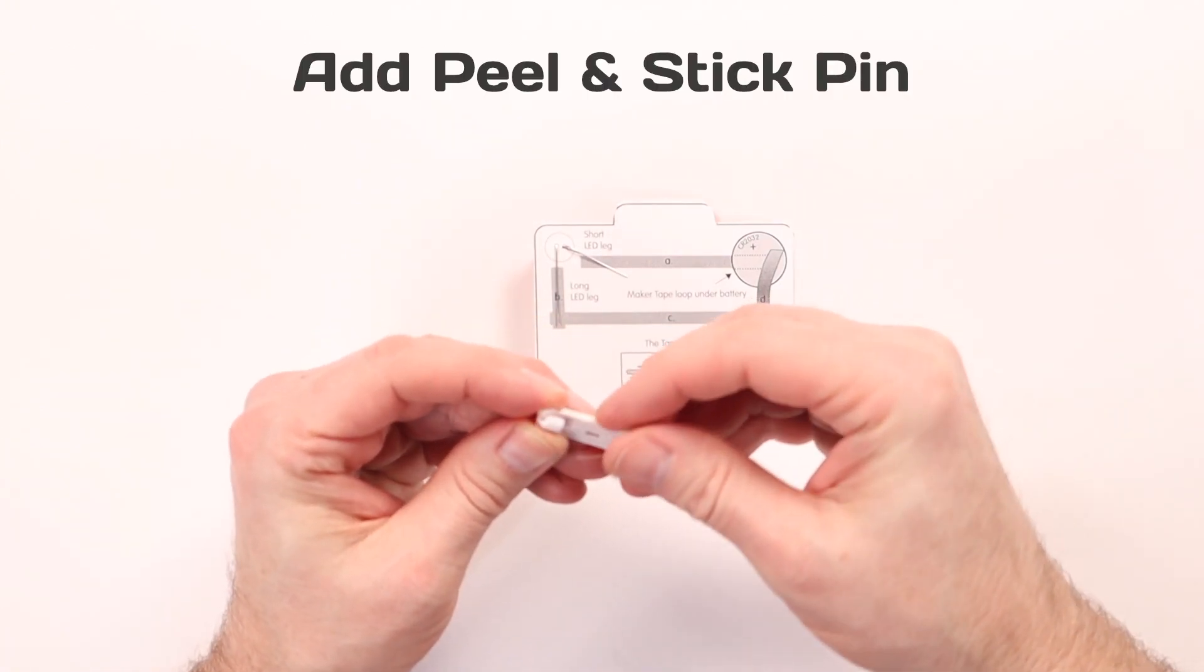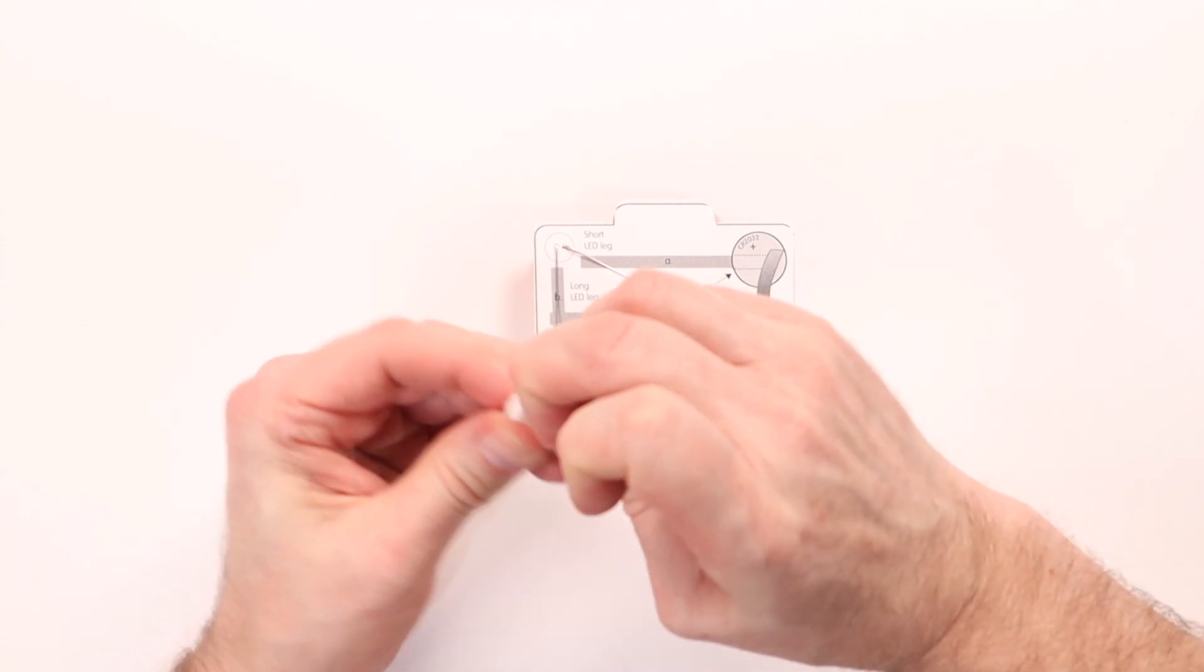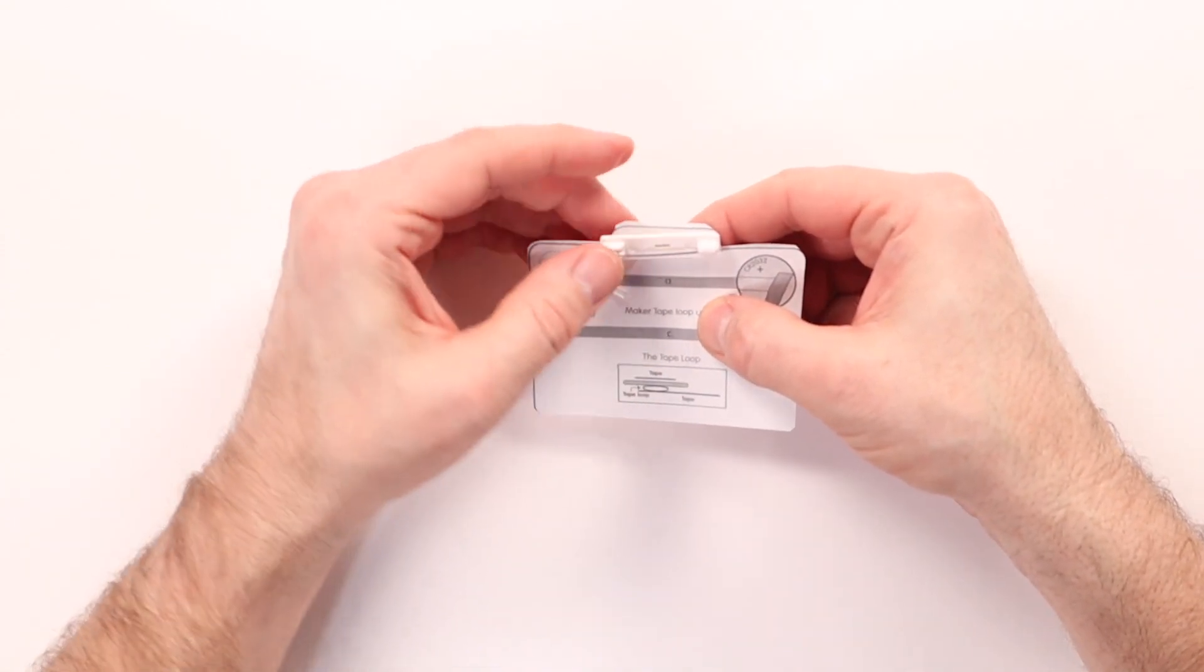Now we're going to add our peel and stick pin. We're going to close that up, peel off the backing, stick that right there on our badge.